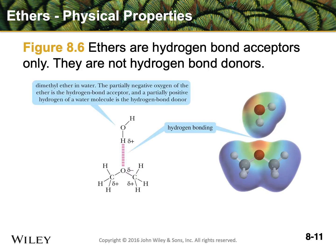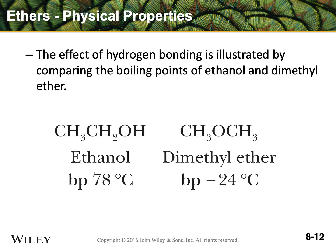To summarize ethers: they can be hydrogen bond acceptors only, meaning water can hydrogen bond to them, but ethers cannot hydrogen bond to anything because they do not have an acidic hydrogen available. This gives a very large difference in boiling points — ethanol has a boiling point of 78°C and dimethyl ether is about 100 degrees lower at negative 24°C. This is all due to ethanol's ability to hydrogen bond from molecule to molecule, whereas diethyl ether only has a weak dipole interaction.